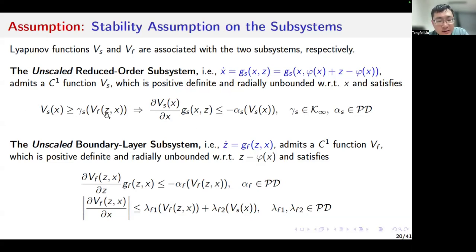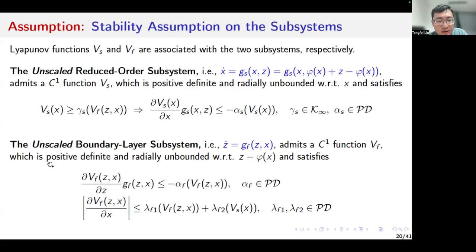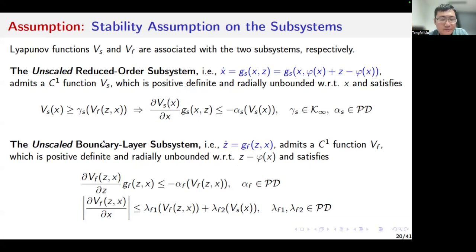If we neglect the robustness condition, this part basically means that the reduced order subsystem is globally asymptotically stable at the origin. This condition is used to characterize the robustness of the stability property of the reduced order subsystem with respect to the error state of the boundary layer subsystem. Vs is also positive definite and radially unbounded with respect to the error state. So this condition basically guarantees the robustness of the reduced order subsystem with respect to the error state of the boundary layer subsystem.